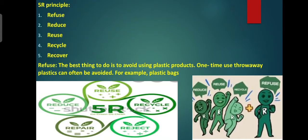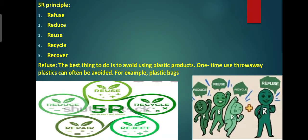One way to look at plastic disposal is the Five R Principle: Refuse, Reduce, Reuse, Recycle and Recover. In order to save the environment from the harmful effects of plastic, we should follow the Five R Principle. The best thing to do is avoid using plastic products. One-time use throw-away plastic can often be avoided — for example, we can carry cotton or jute bags when we go shopping, and say no when a shopkeeper offers us a plastic bag.